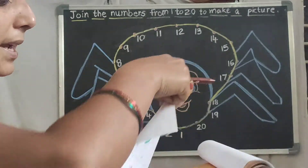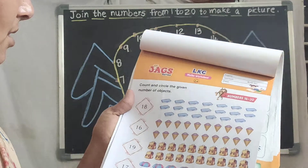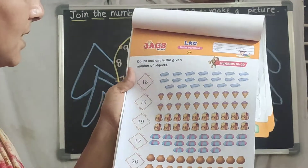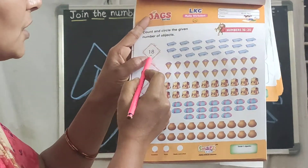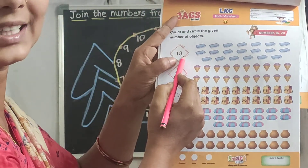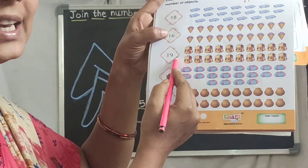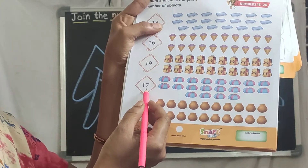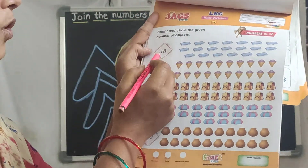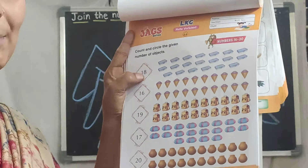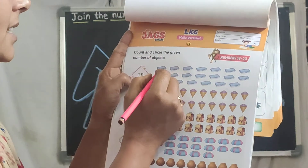After coloring all shapes, turn your page. Here again you can see some objects, and on the left side you can see the numbers — 18, 16, 19, 17, 20. What should you do here? Whatever number you see, circle that many objects. So count up to 18 and circle those objects.